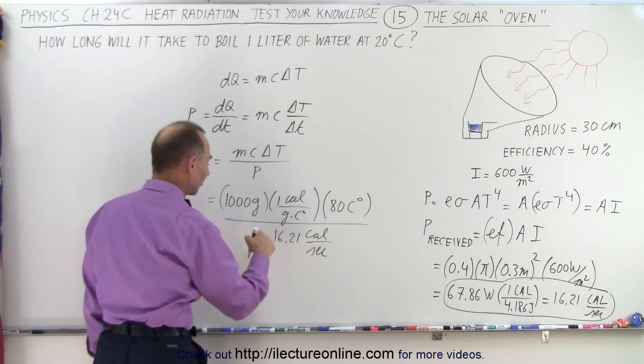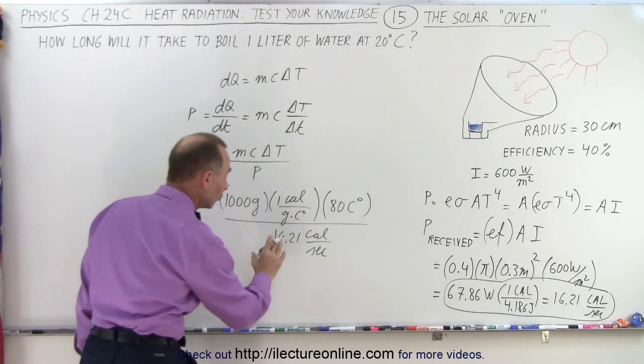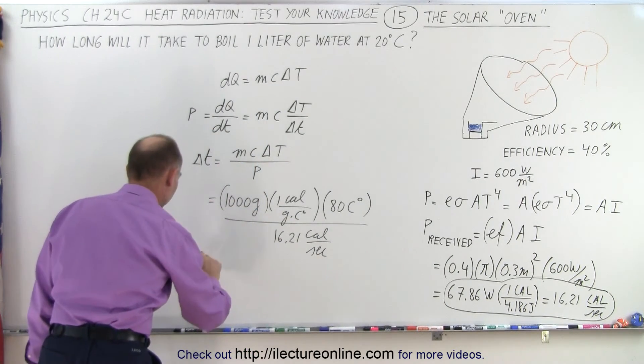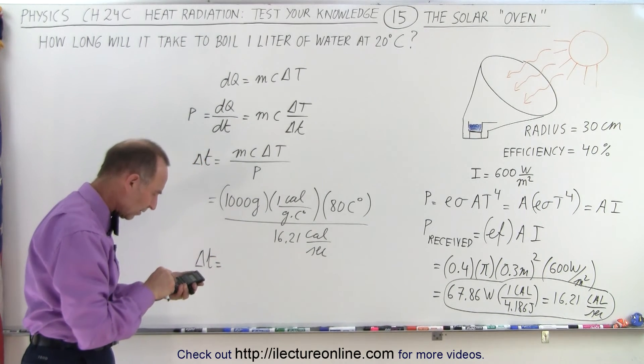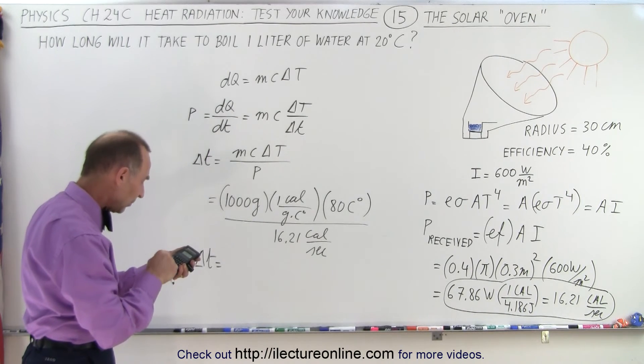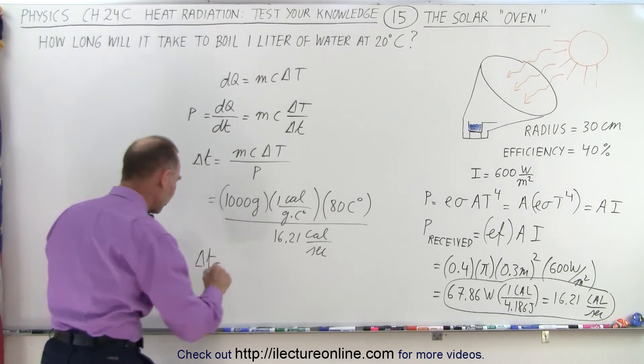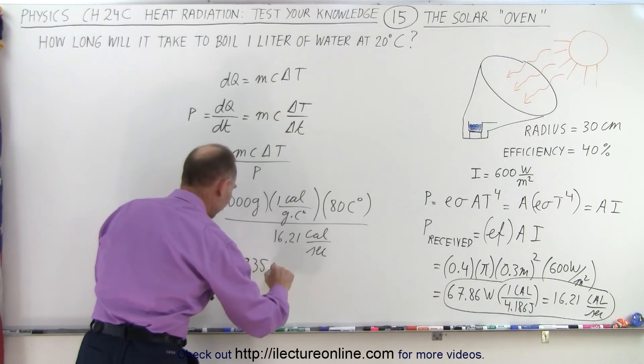Notice that the calories cancel out, the grams cancel out, the centigrade degrees cancel out. Now we're ready to solve this in terms of seconds. So the delta t, the amount of time that it takes in seconds, is going to be equal to the inverse of that times 1,000 times 80, and that gives us 4,935 seconds.